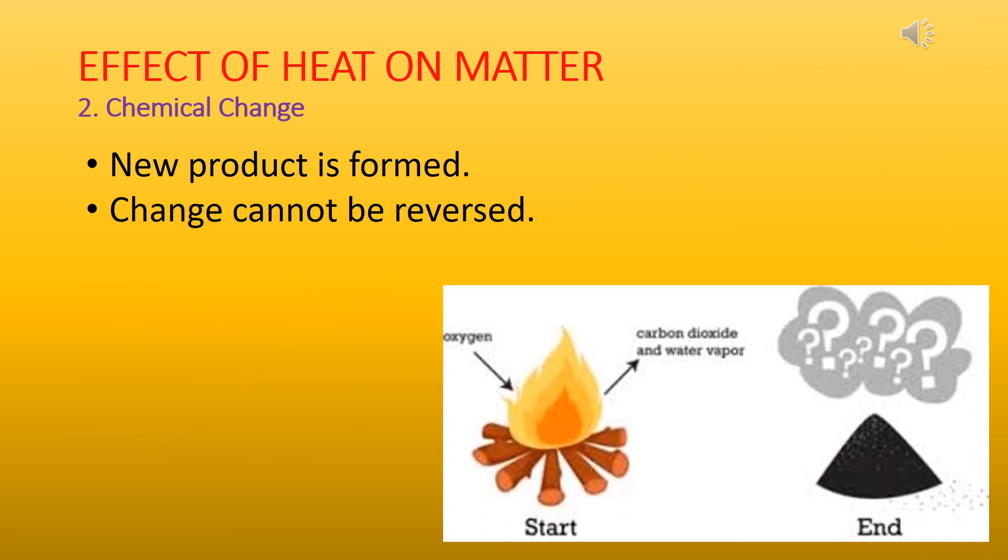Lastly, we will see chemical change as an effect of heat on matter. So with heating, we can see even a chemical change in the matter, especially when you burn a substance or bring about combustion. You see that a new product is formed. Like in this case, we have seen that wood is burned and you get ash, which is chemically very different from wood. So it is a chemical change, and this change cannot be reversed. Again, we can see that due to heat, the matter has transformed.